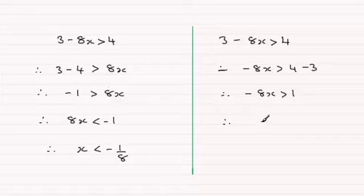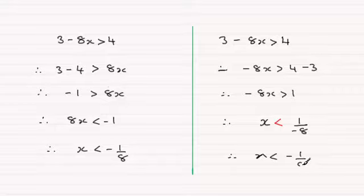So it would turn around like so. You'd end up with 1 divided by minus 8, and that is going to be x is less than minus 1 eighth. Okay.